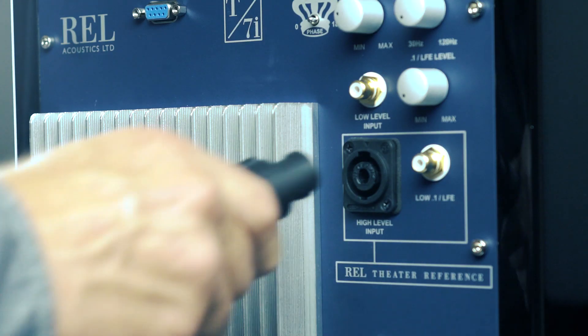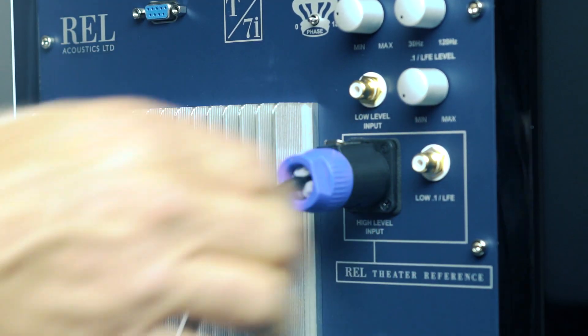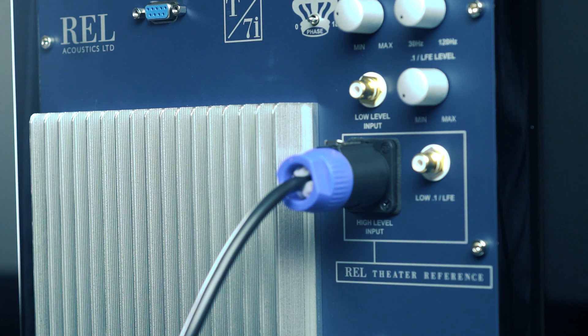The final step is to plug the speak-on connector at the other end of the cable into the REL subwoofer's high-level input.